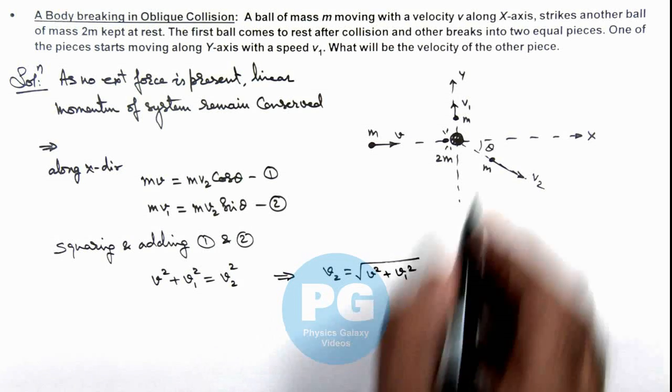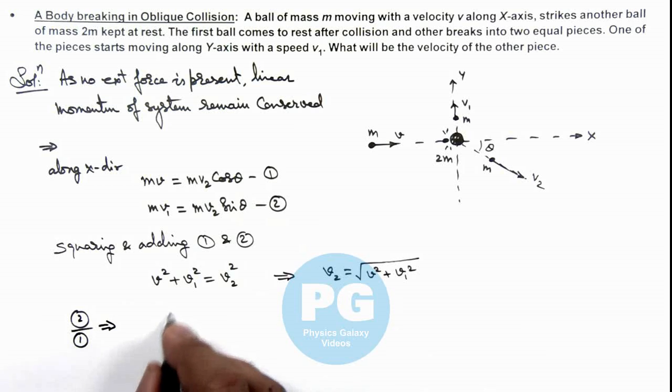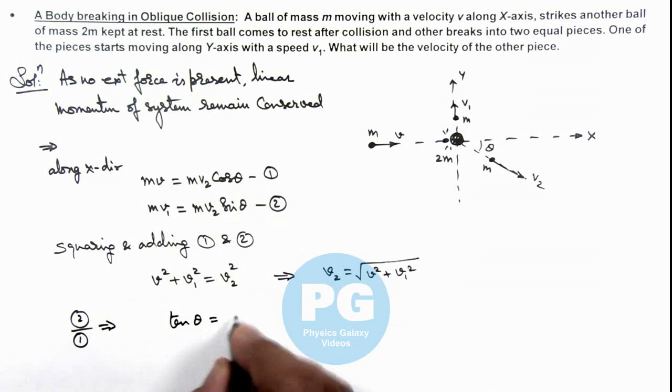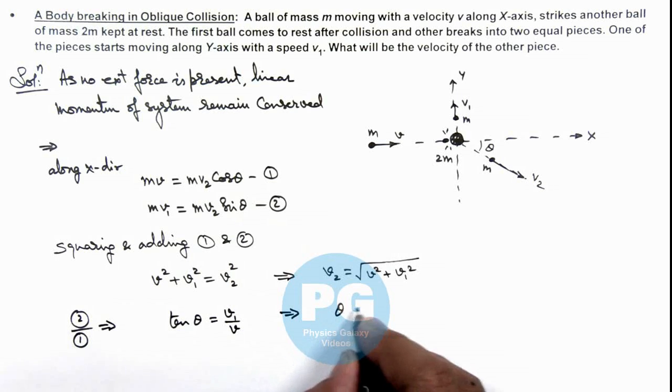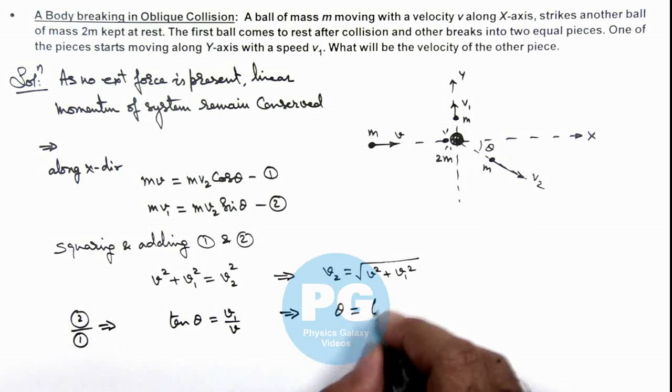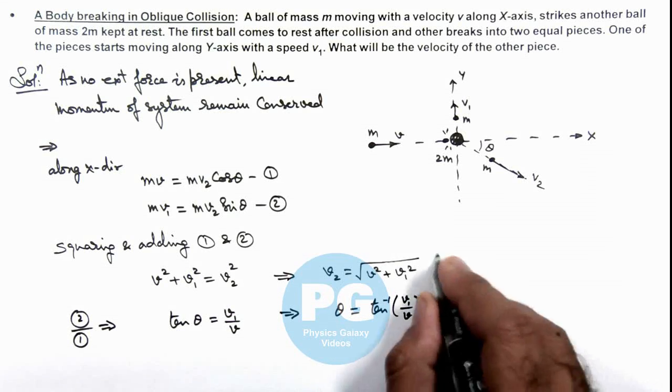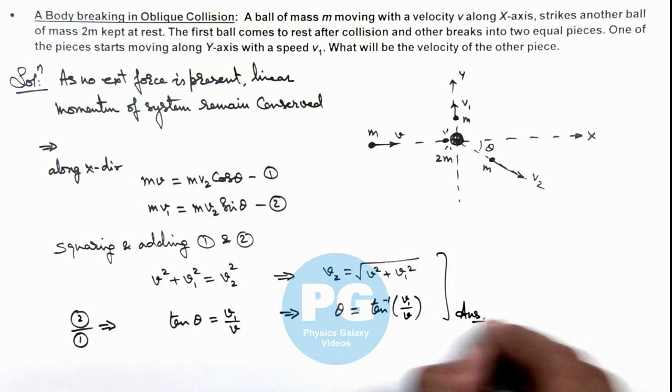And if we wish to calculate the value of theta we can divide the two equations like equation 2 by 1. This implies the value of tan theta is equal to v1 by v. This implies the value of the angle at which the remaining part is going will be tan inverse of v1 by v. So these are the final results of this problem.